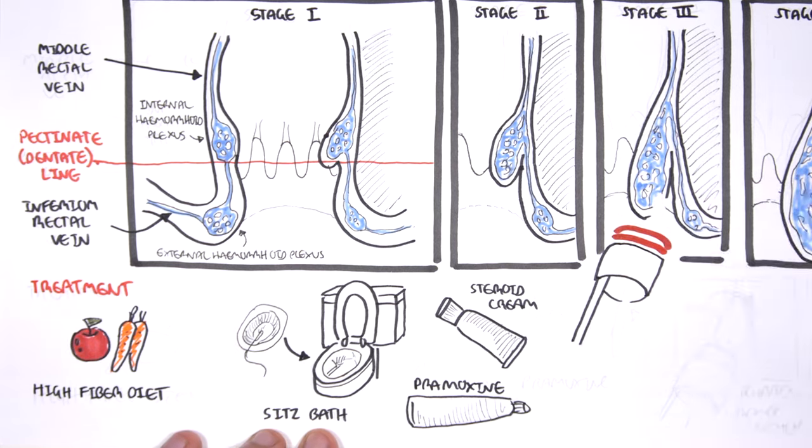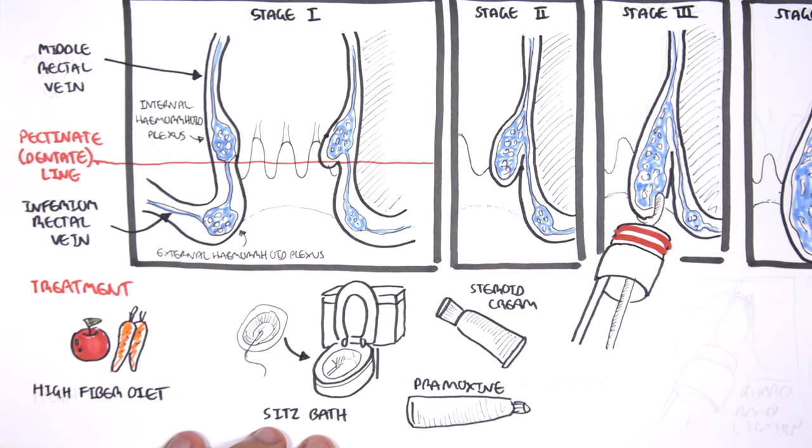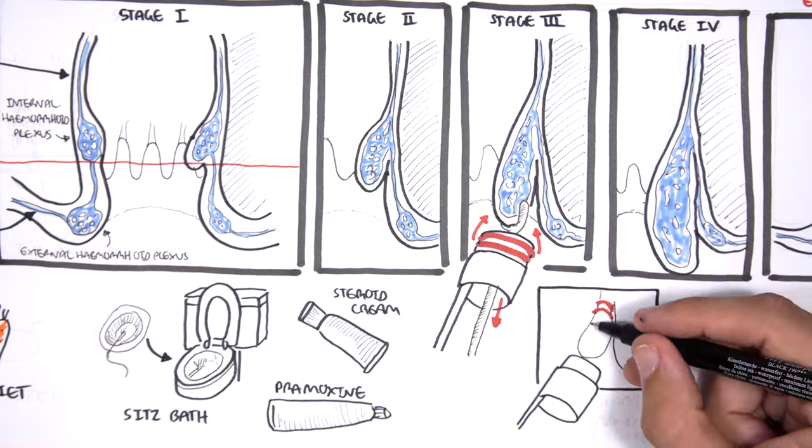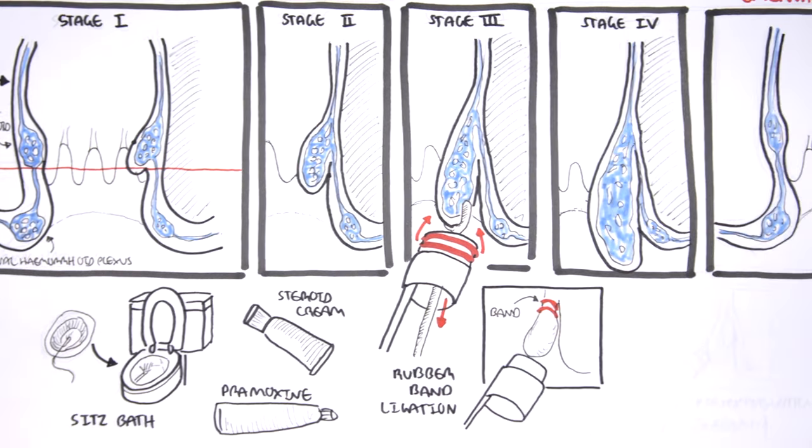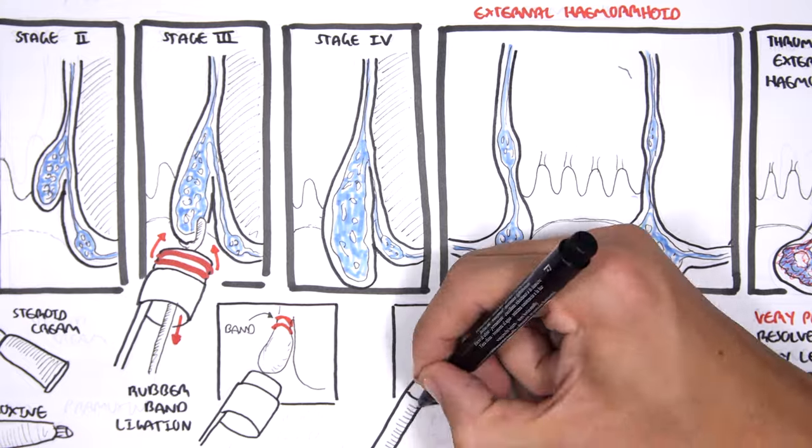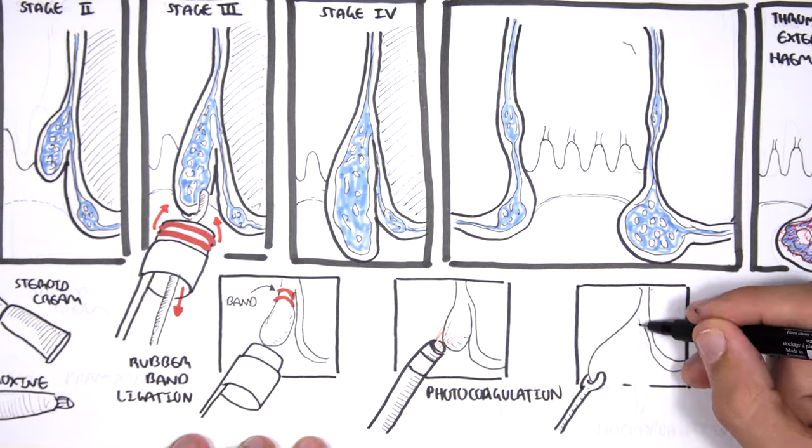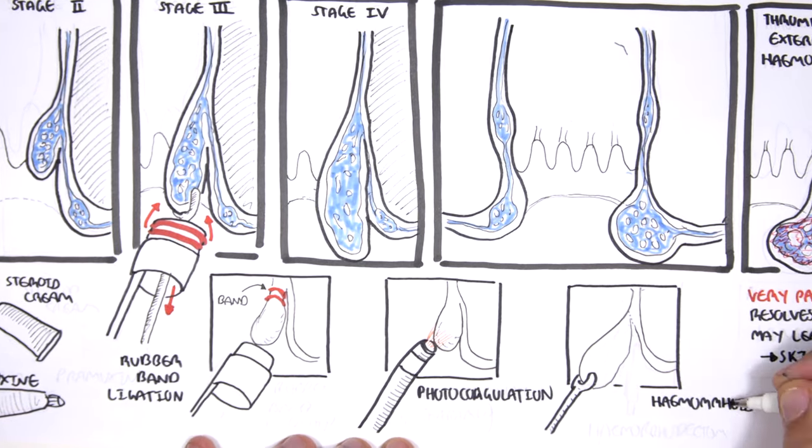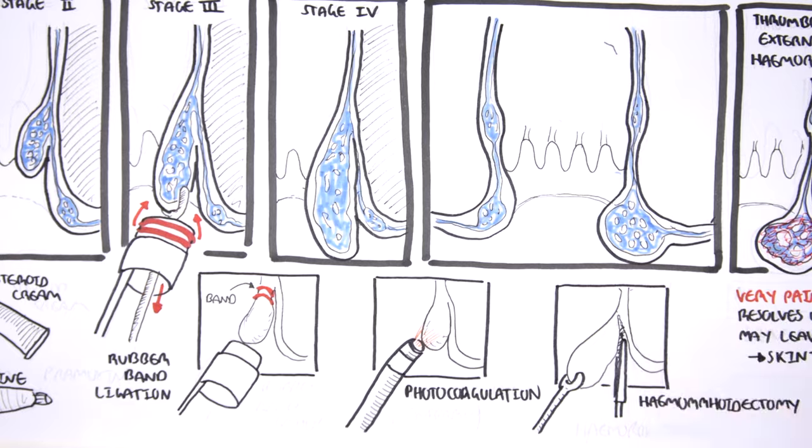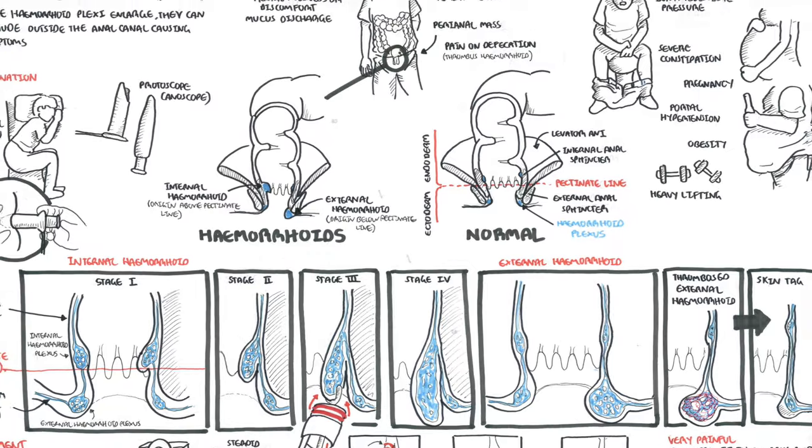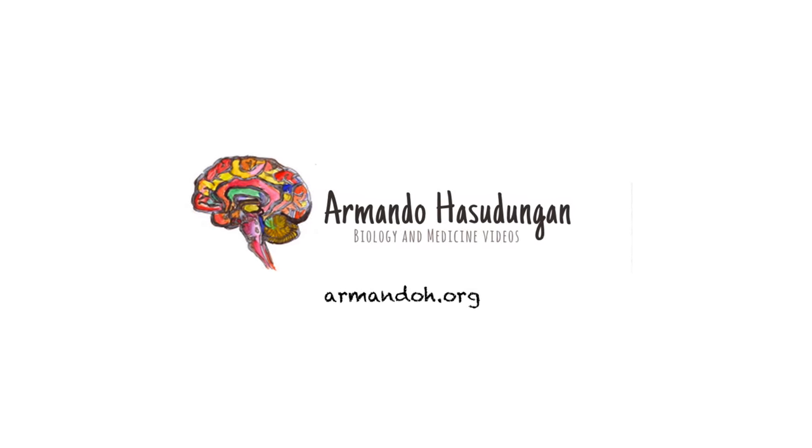For stage 3 and 4, rubber band ligation can be done. Rubber band ligation is essentially a procedure in which the hemorrhoids are tied off at its base with rubber bands, and this will cut off the blood supply. Other options include photocoagulation, where infrared light is used to break down the hemorrhoid. Hemorrhoidectomy can also be performed, which is essentially cutting the hemorrhoid out.